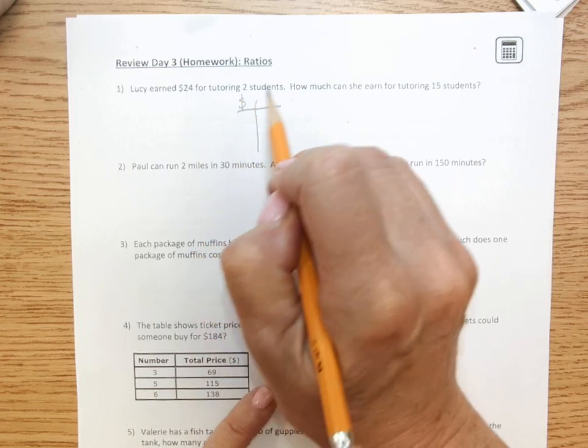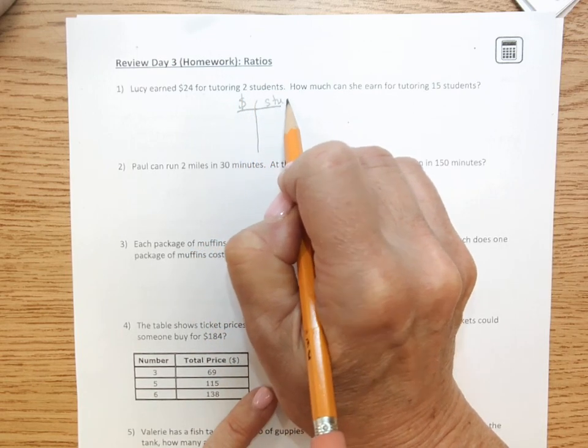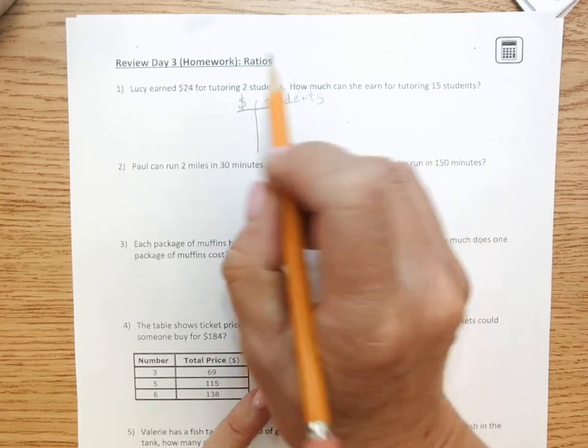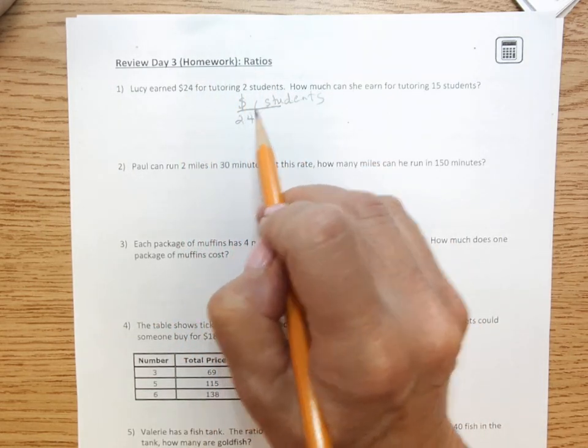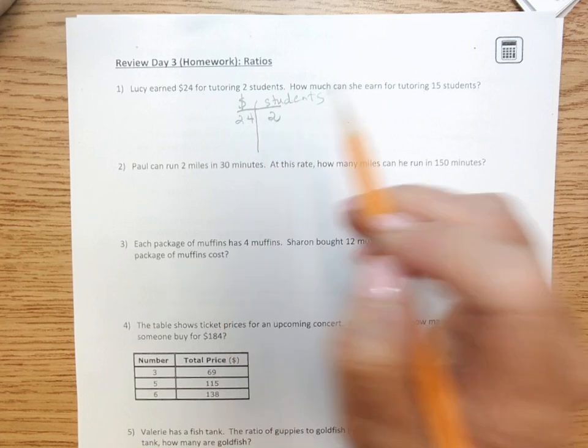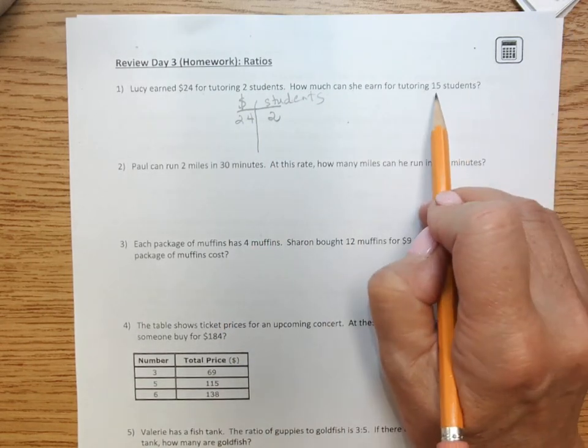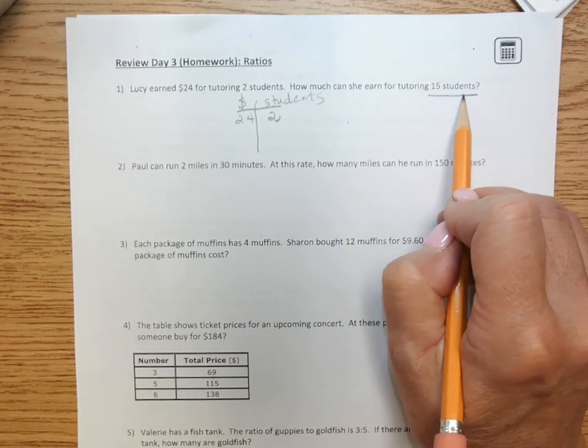I'm going to have dollars and I'm going to have students. And I'm going to take my information. So I've got $24 for two students. Then I look here and I've got 15 students.